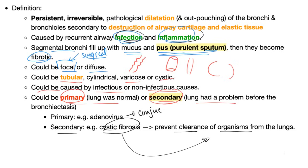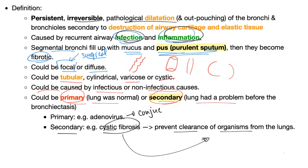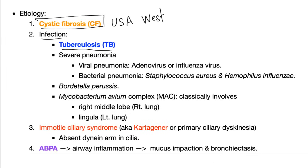The definition: irreversible pathological dilatation and outpouching of bronchi and bronchioles. What are the causes? Number one: cystic fibrosis — the most common cause in the United States and all western countries. Number two: infection — tuberculosis is the most common cause in third-world countries and the most common cause worldwide.